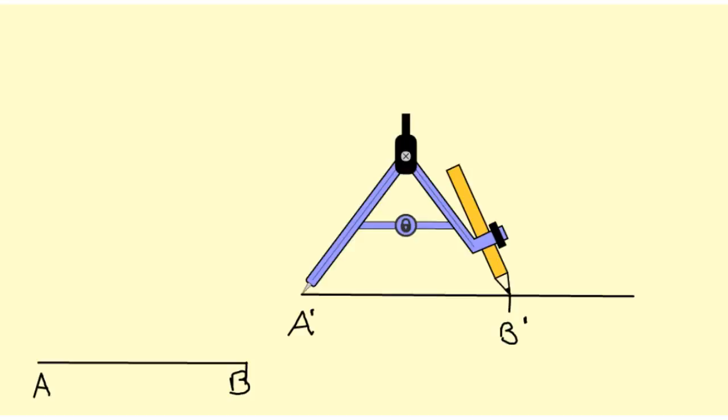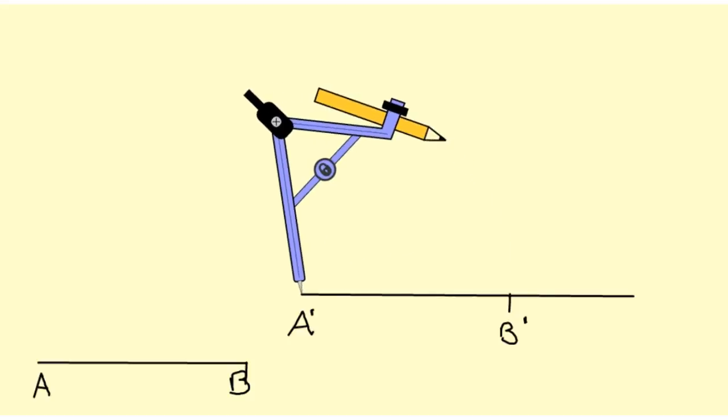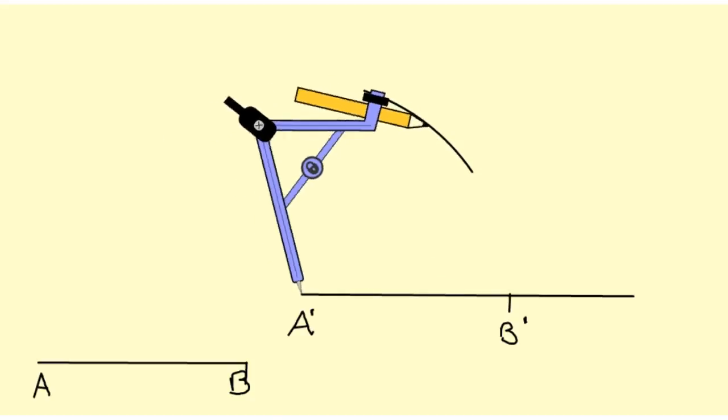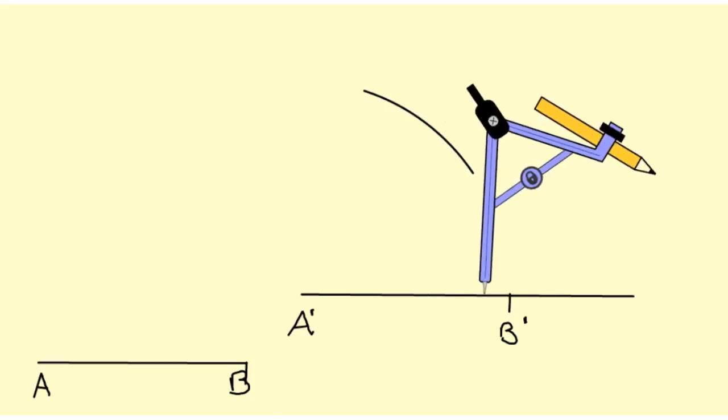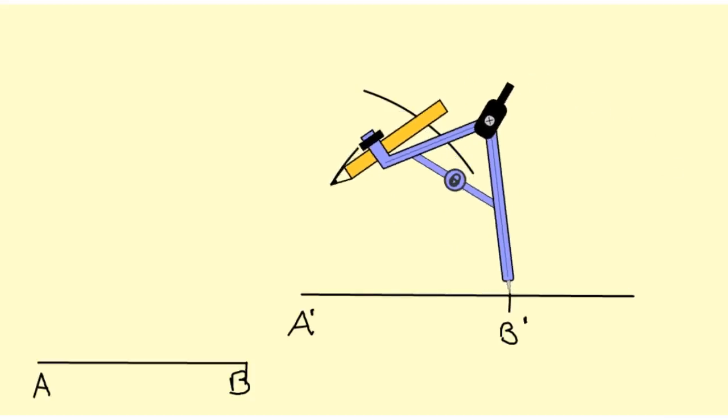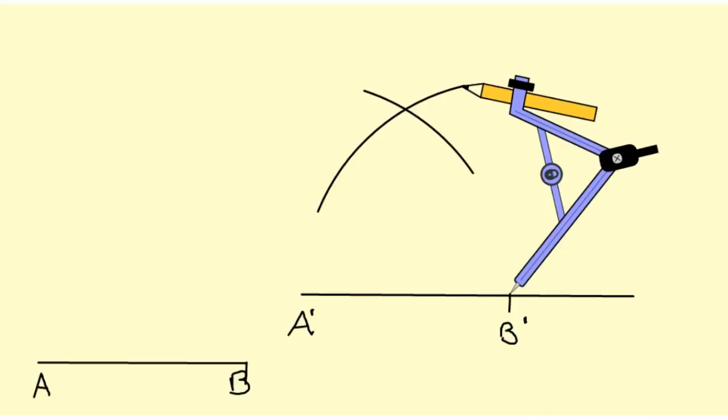Now my compass is already open to the length AB, which means the side that starts at point A' has got to be this long, somewhere along that arc. It also means that the third side has to lie somewhere along this arc, which means what I'm really looking for is this point right here. That's going to be the vertex of my equilateral triangle.